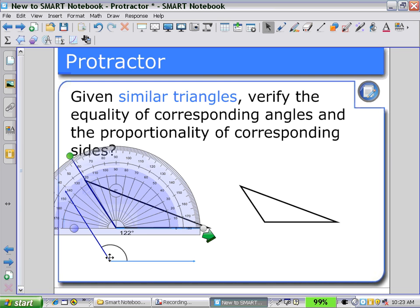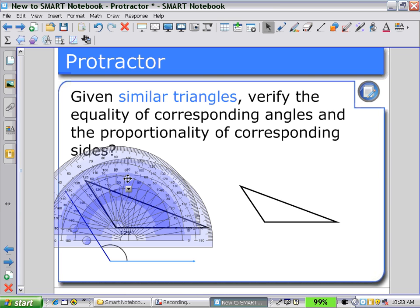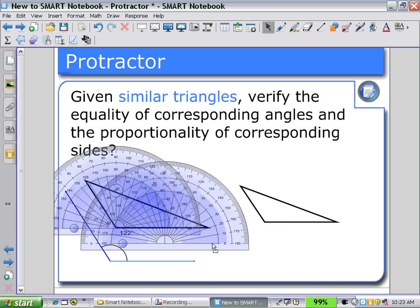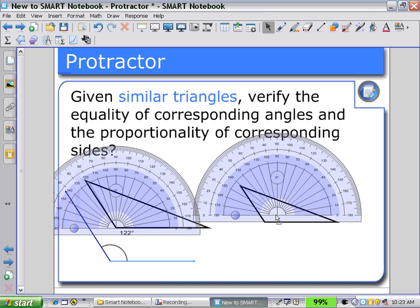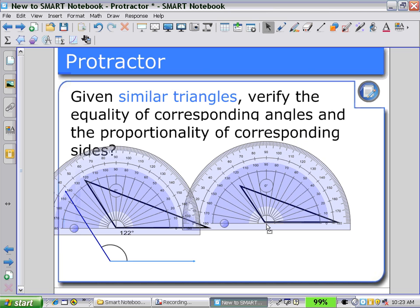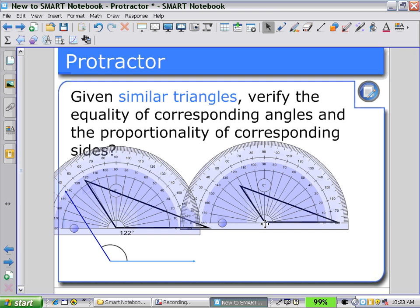Using another protractor, so clicking on my protractor, I can either go to the secondary toolbar or just clone this one. So there I have a second protractor to use, and placing it on my other triangle.